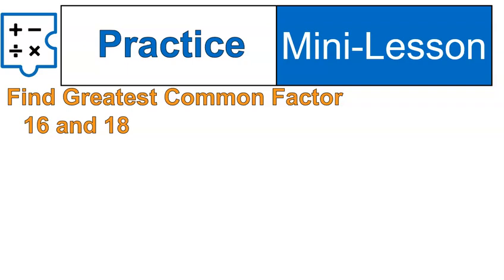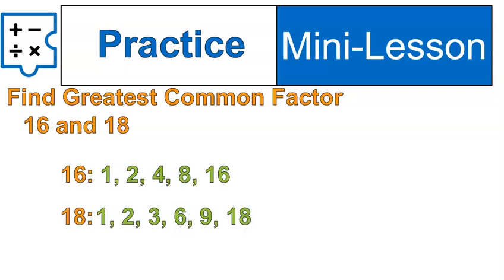When I'm finding the greatest common factor, I list the factors of the first number, the factors of the second number. I identify the ones that are common. And in this case, there's only one that's common, and that's the number 2. Therefore, that is my greatest common factor. That's it. Pretty straightforward with that.